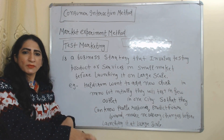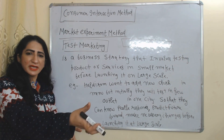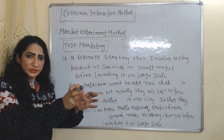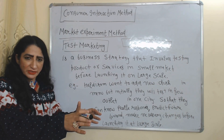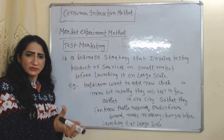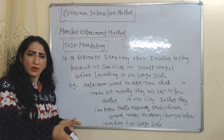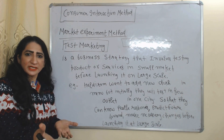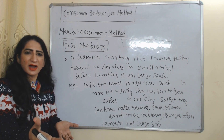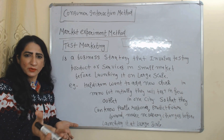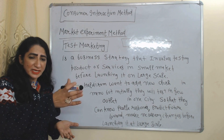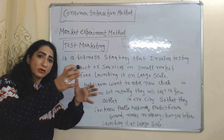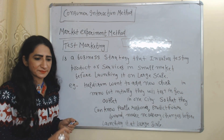For example, Haldiram has many branches in many cities and wants to introduce a new dish on their menu. Initially, they will introduce it in a small outlet in one city so that they can assess consumer demand and responses, and make necessary changes before launching it at large scale.